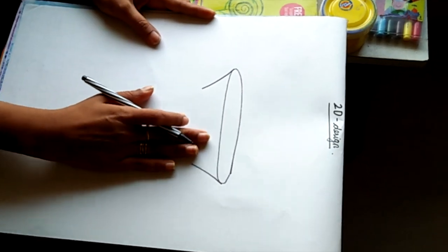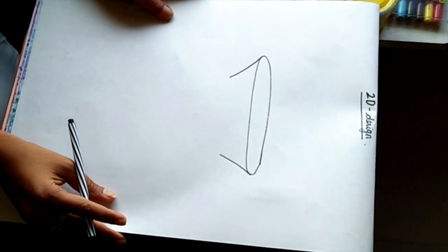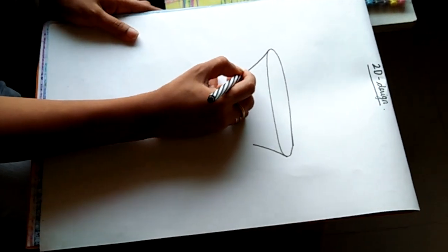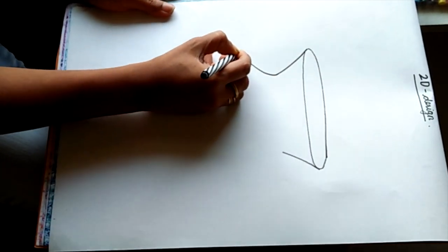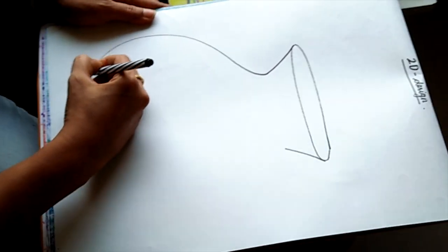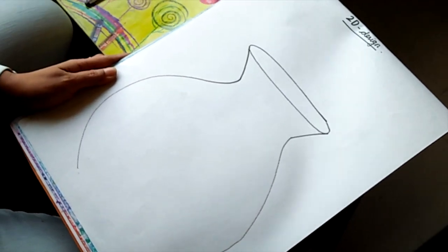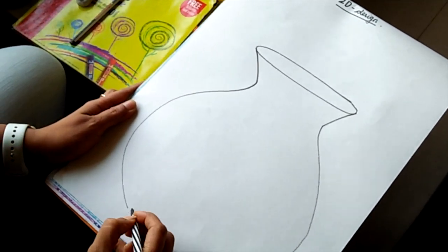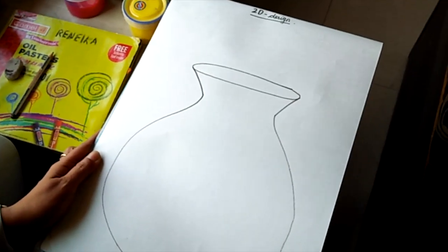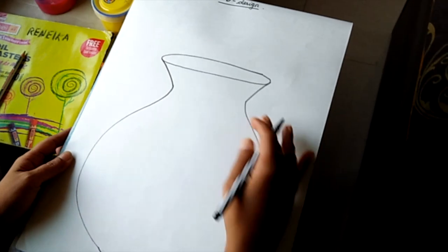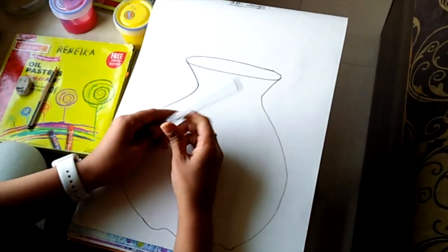Now flower pot could be of any shape, any design. I'm going to stick to a very basic one. I'm just going to stick in a big bump out. Another one from the other end. Trying to make it a little more symmetrical. Sticking to a very basic form of flower pot.